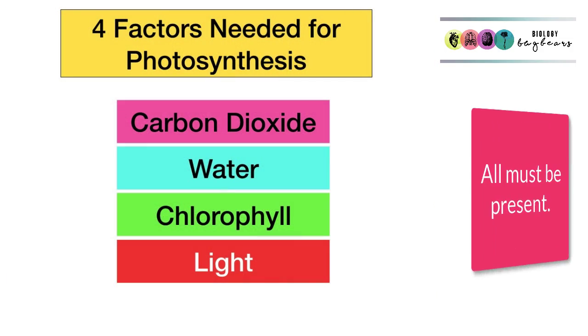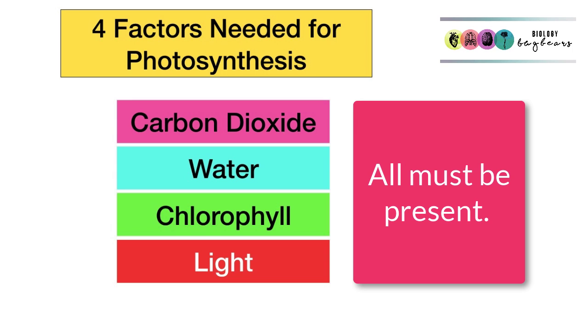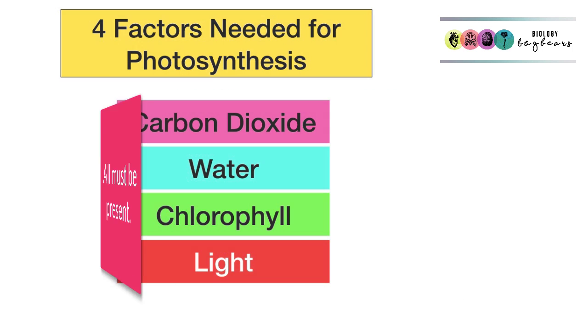There are four factors necessary for photosynthesis: carbon dioxide, water, chlorophyll, and light. If any one of these four factors is missing, then photosynthesis simply will not happen.